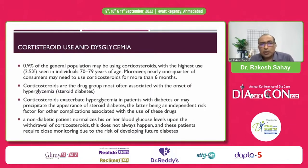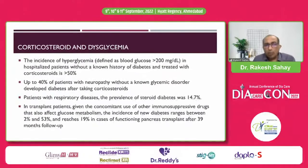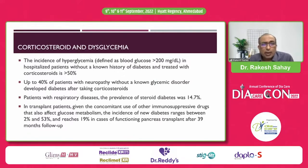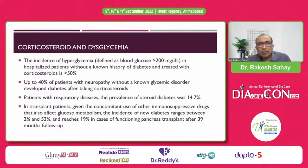Steroid-induced hyperglycemia may precipitate the appearance of diabetes — non-diabetic individuals may normalize blood glucose levels once steroids are stopped, but there are many individuals in whom it may precipitate the development of diabetes. The incidence of hyperglycemia after steroid use is significant: more than 50% of those who use steroids develop blood glucose levels more than 200 mg/dL. Up to 40% of patients with pre-diabetes developed diabetes after taking steroids.